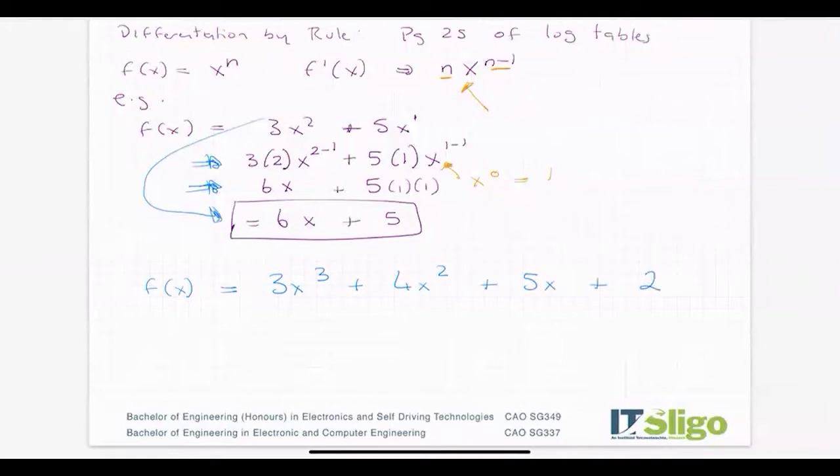You'll get 9x². Three threes are nine, reduce the power by one, plus two fours are eight, reduce the power by one.